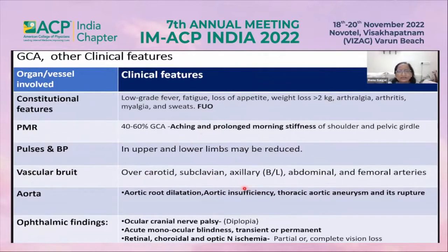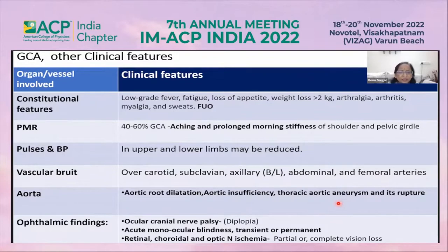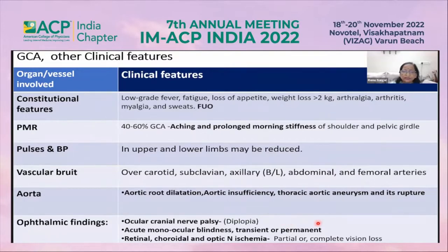Pulses and blood pressure in upper and lower limbs may be reduced. Vascular bruits may be heard over the carotid, subclavian, bilateral axillary, abdominal, and femoral arteries. Aortic root dilatation, aortic insufficiency, thoracic aortic aneurysm and its rupture can occur. Ocular cranial nerve palsy due to involvement of the vasa nervorum can cause diplopia, and acute monocular blindness — transient or permanent — can occur. Retinal, choroidal, or optic nerve ischemia can lead to partial or complete vision loss.